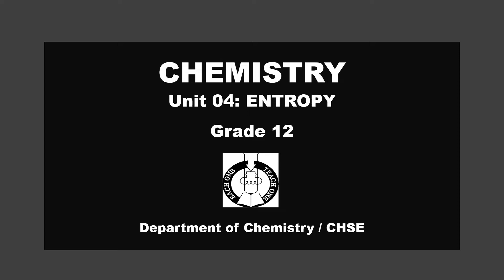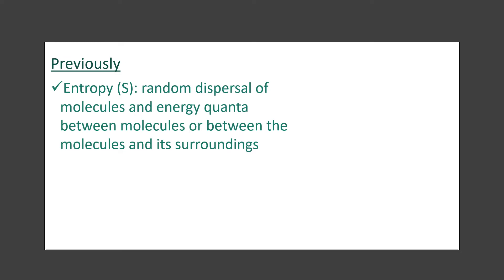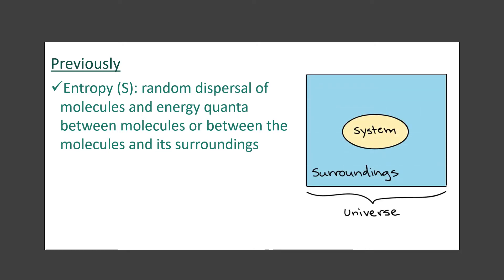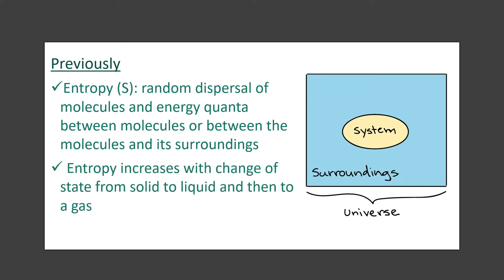Now do you remember what we saw in the last class? Let's try and recall some of the concepts we saw during that class. Last time we saw an introduction to entropy — we used a capital S to denote entropy — and we also had a look at some definitions and several examples. We defined it as the random dispersal of molecules and energy quanta between molecules and between the molecules and surroundings. We also looked at the terms 'system,' which is the species involved in the reaction, and 'surroundings,' which is everything else. Furthermore, we said that when disorder increases, entropy increases. We saw this through the entropy versus temperature graph, where entropy increased with the change of state from solid to liquid to gas.